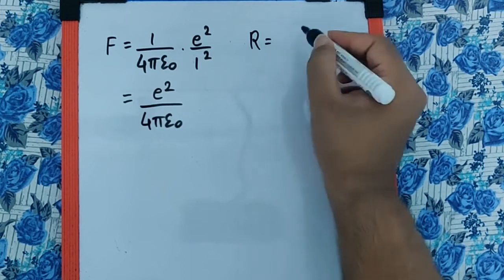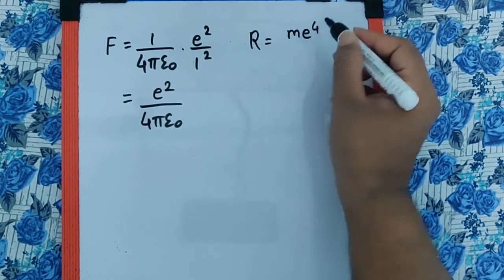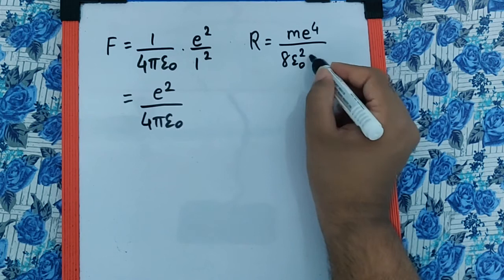Now the formula of Rydberg's constant, if you remember, it is Me⁴ upon 8ε₀² CH³.